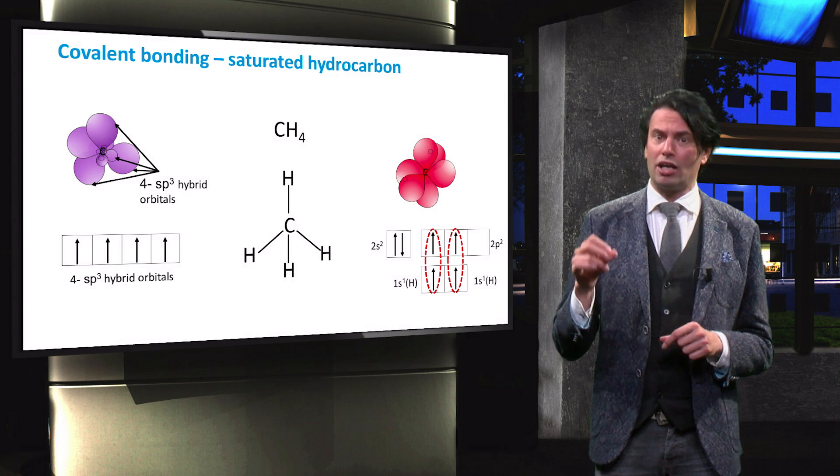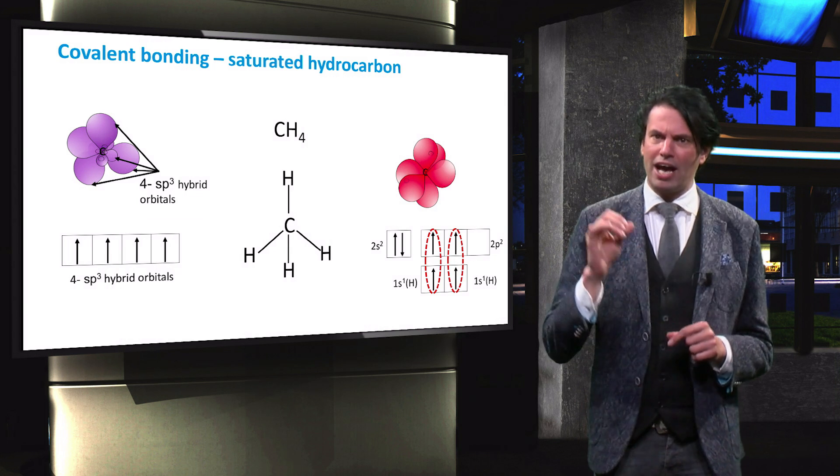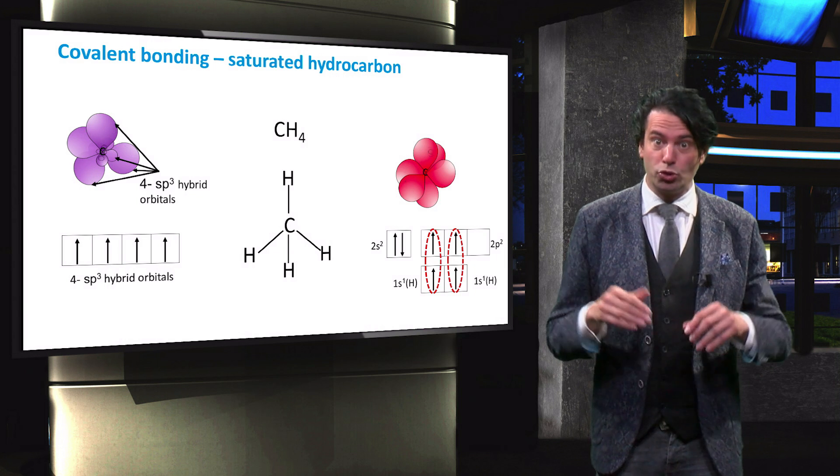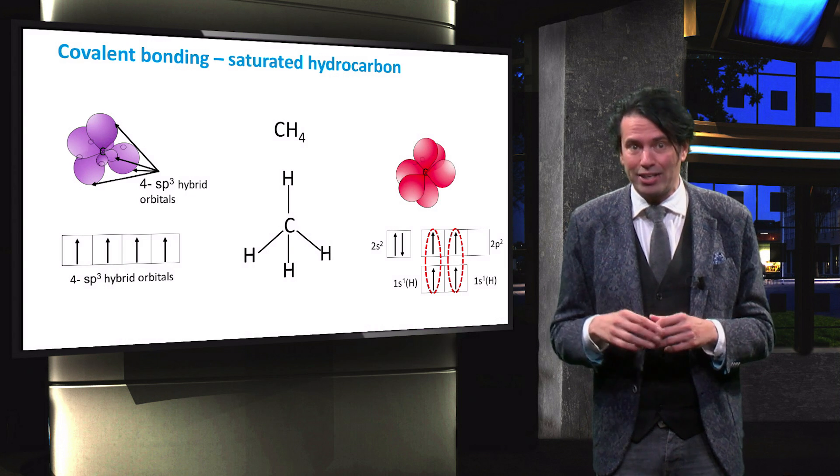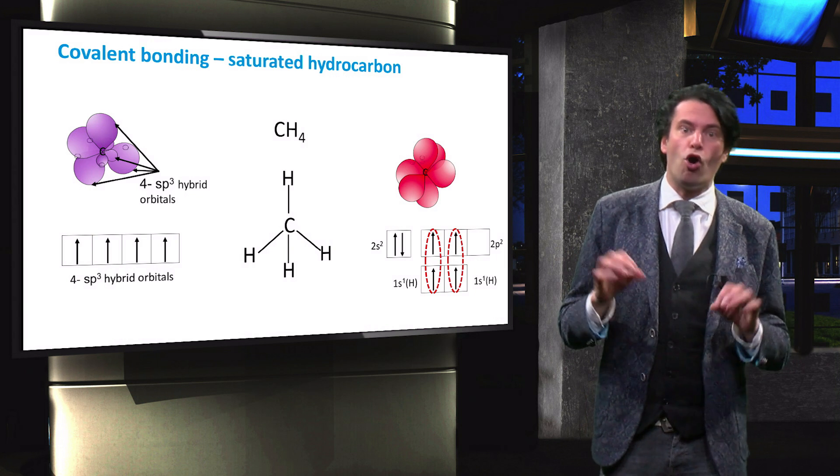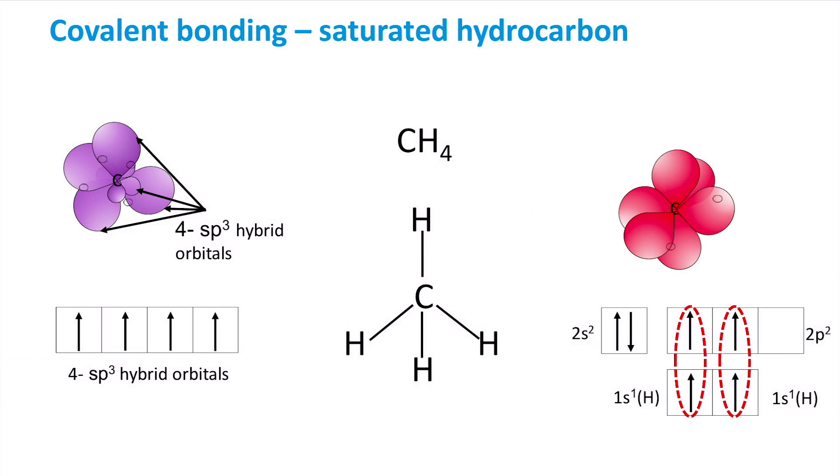This now allows the 4 sp hybrid orbitals to share their electron with the single electron in the 1s orbital of the hydrogen. Consequently, carbon can bond with 4 hydrogen atoms.